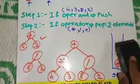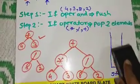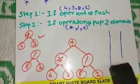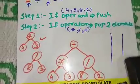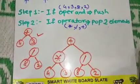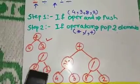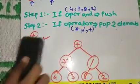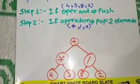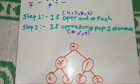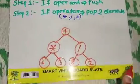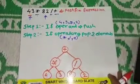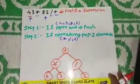The multiplication operator has 4 as its left child and 3 as its right child. The division operator has 8 as its left child and 2 as its right child. We repeat these steps until we have traversed the entire postfix expression, and our stack is now empty. This is our constructed expression tree.